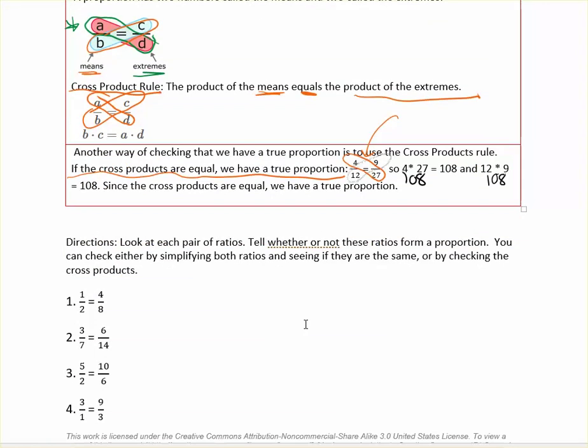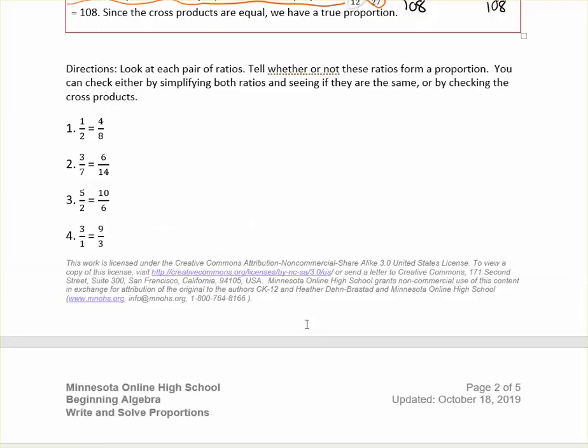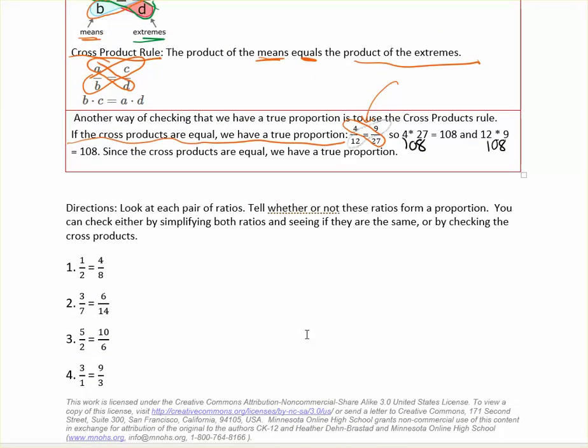So for the first part of the worksheet, there are eight problems where you are going to tell whether or not you have a true proportion. Remember, there's two ways of doing that. One way is to simplify both ratios and see if they are the same. The other way is to multiply the cross products and see if you get the same product for each.